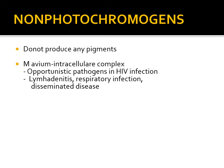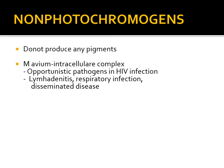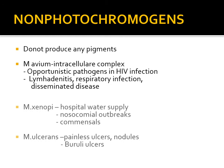The MAC complex contains two important organisms: Mycobacterium avium and Mycobacterium intracellulare. This complex is important because it is one of the opportunistic pathogens in HIV infection. When the CD4 T-cell count falls below 50, there is a risk of this infection, usually presenting with lymphadenitis, respiratory infection, and disseminated disease. Mycobacterium xenopei can cause nosocomial outbreaks via hospital water supply, and Mycobacterium ulcerans causes Buruli ulcer — painless ulcers.